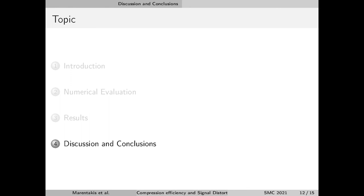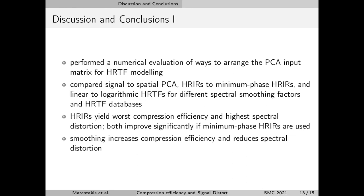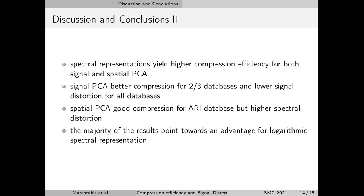In the discussion and conclusions, we compared signal to spatial PCA using head-related impulse responses versus head-related transfer functions, applying minimum phase approximation, and using linear or logarithmic HRTF magnitude, as well as the effect of spectral smoothing. We found that head-related impulse responses yield the worst compression efficiency and the highest spectral distortion irrespective of the database used. However, both improve significantly if minimum phase HRIRs are used. Furthermore, smoothing improves compression efficiency and reduces spectral distortion. Spectral representations yield higher compression efficiency for both signal and spatial PCA, and signal PCA provides better compression efficiency for two out of three databases and lower signal distortion for all databases tested.